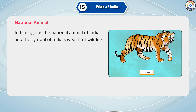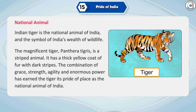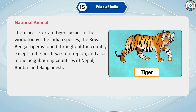The Indian tiger is the national animal of India and the symbol of India's wealth of wildlife. The magnificent tiger, Panthera tigris, is a striped animal. It has a thick yellow coat of fur with dark stripes. The combination of grace, strength, agility and enormous power has earned the tiger its pride of place as the national animal of India. There are six extant tiger species in the world today. The Indian species, the Royal Bengal tiger, is found throughout the country except in the northwestern region and also in the neighboring countries of Nepal, Bhutan and Bangladesh.